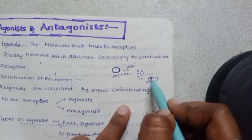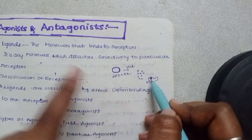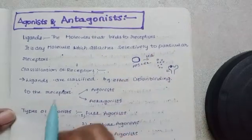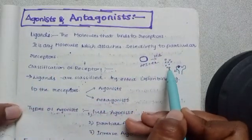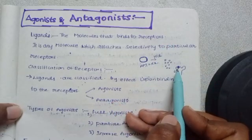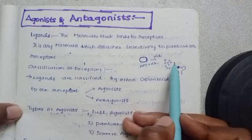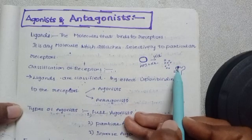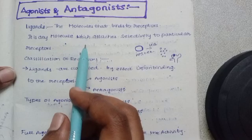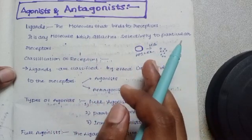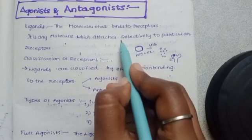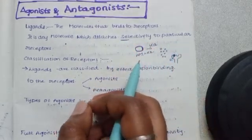The receptor activity has enhanced. So the receptor activity is going to enhance. Then this is the agonist — it will produce an effect. So first of all, what is a ligand? A ligand is the molecule that binds to a receptor. Those are the ligands. They will bind and produce a positive action or a reverse action. It is any molecule that attaches selectively to particular receptors.